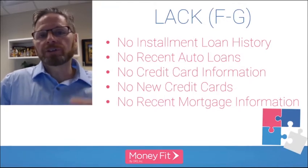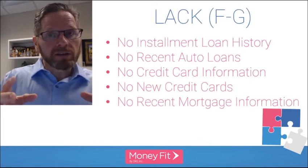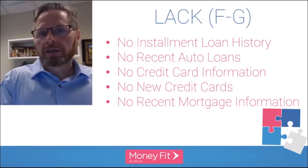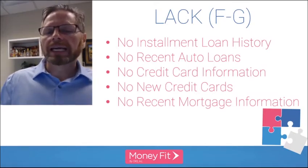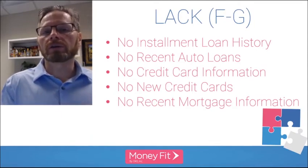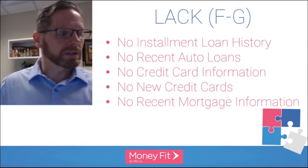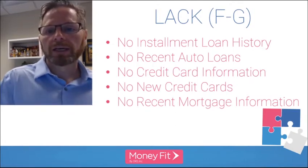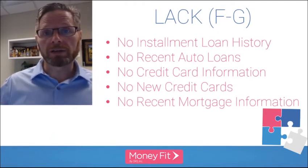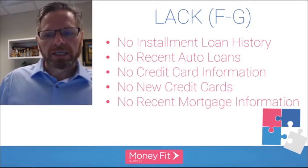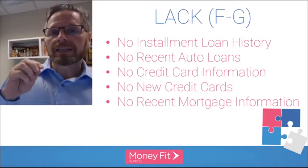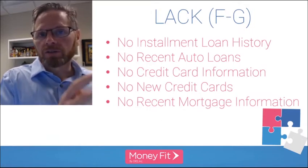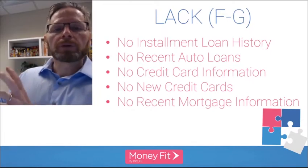Codes F and G have to do with lack of information. When FICO tries to predict future behavior, it bases that prediction on past behavior, and certain types of information are more reliable than others. If those most reliable types aren't on your credit report, it will generate a code starting with F or G. For example: no installment loan history, no recent auto loans, no credit card information, no new credit cards.